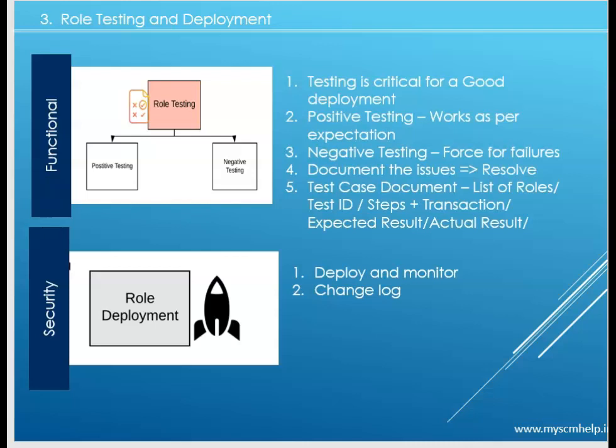In positive testing, we give the roles the values which are configured. For example, if there is a derived role with a plant value of 1000, we use that value and test whether the role allows creating a material, vendor, or other record for that organizational element with the authority object values — it should allow creation. That is the objective of positive testing.